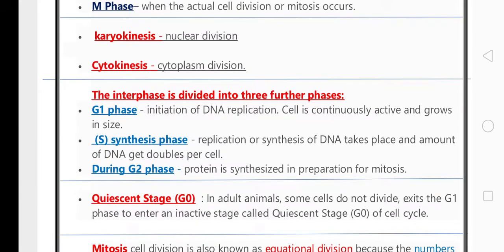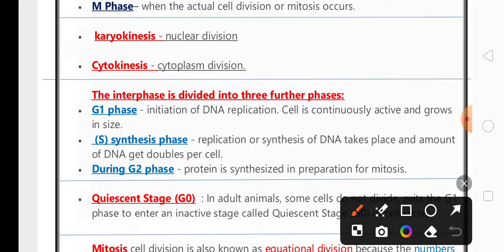In interphase there are three sub-phases: G1 phase, S phase, and G2 phase. In G1 phase, DNA replication initiation takes place. In this phase, the cell actively grows and is ready to divide the nucleus.